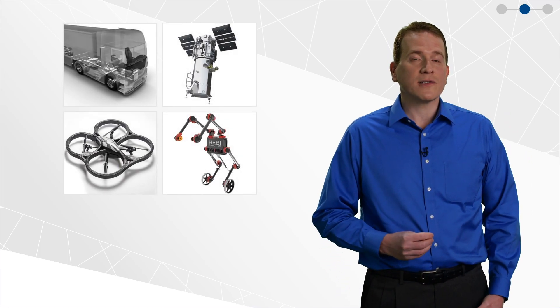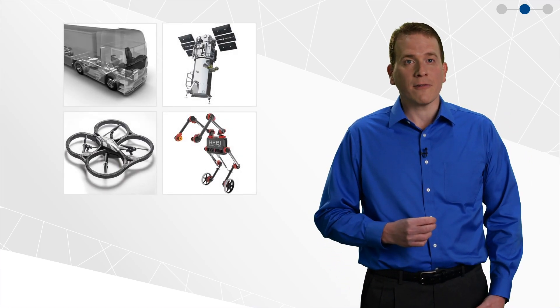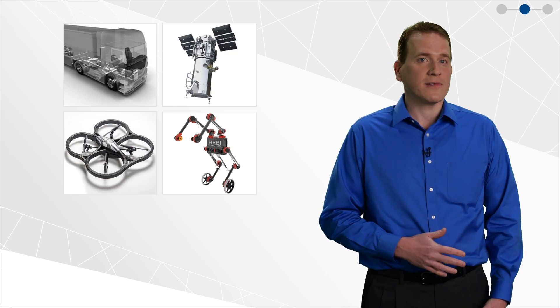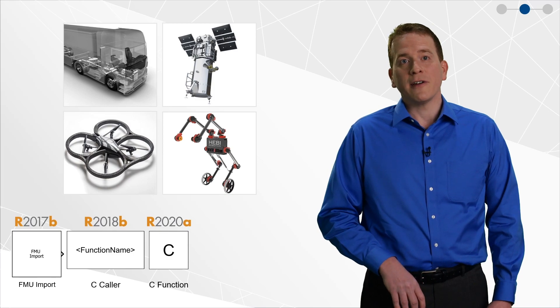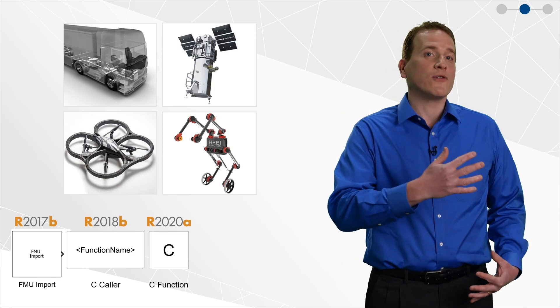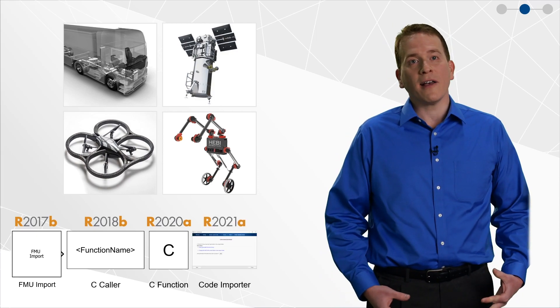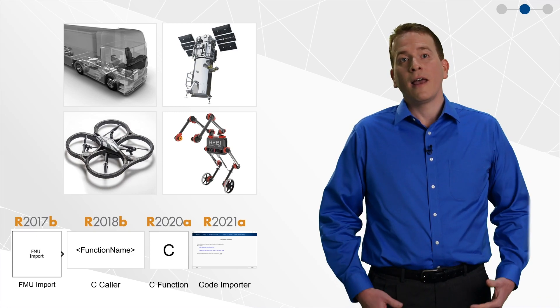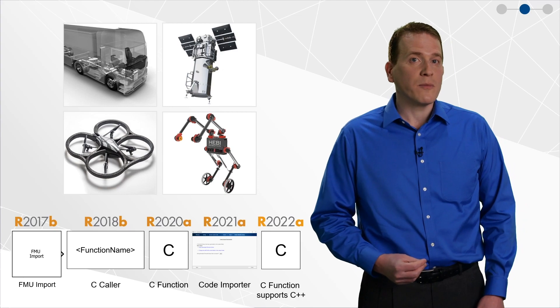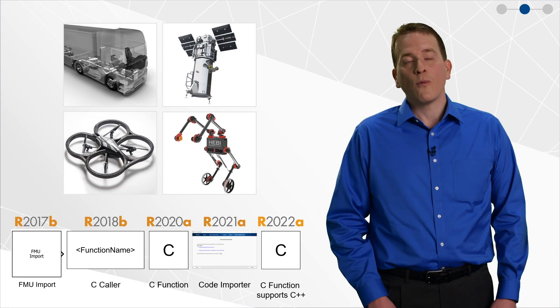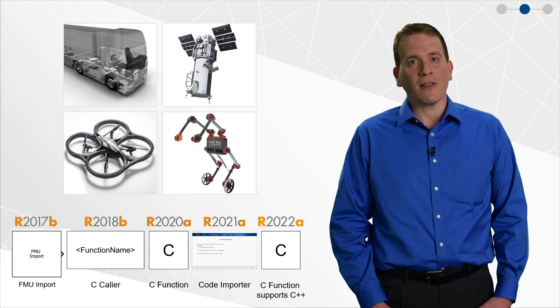So we've gone over new ways to scale up your simulations and computations. But scale is also about the scope of your design and building up a full model of your system. MATLAB and Simulink are often used together with other programming languages to design the different components that make up your system. Over the last several years, we've created several blocks to bring in FMUs and C code. Last year, we also introduced a code importer to guide you through bringing in custom code. And this year in 22A, the C function block now supports C++ code, which further expands the type of code you can bring into Simulink.